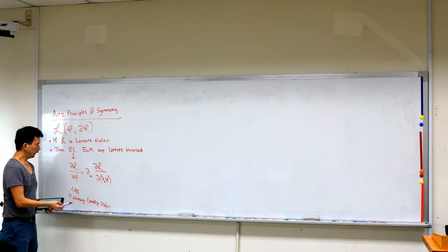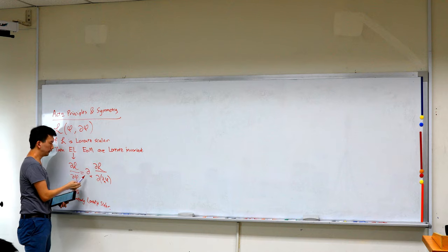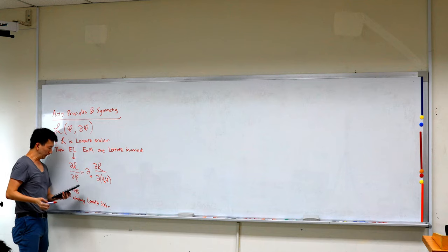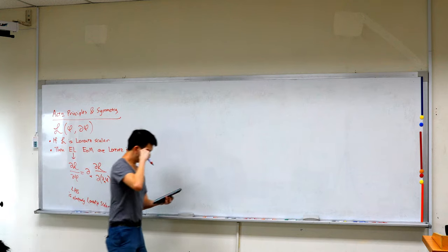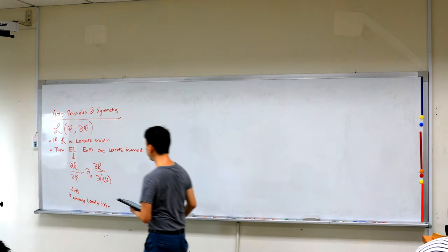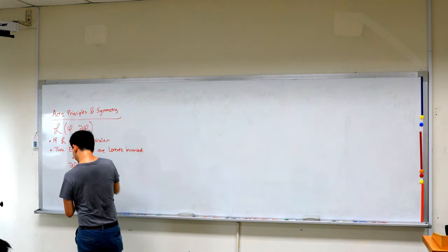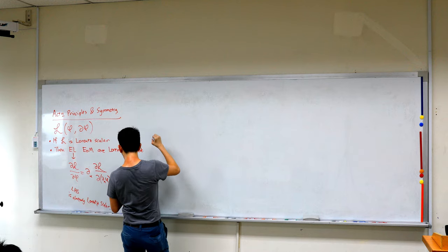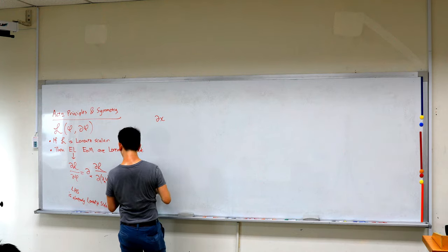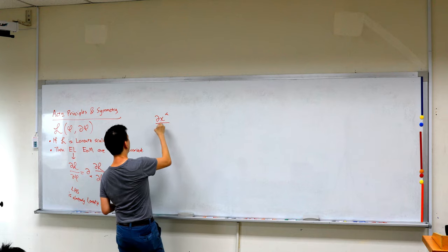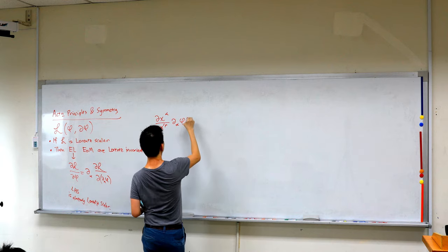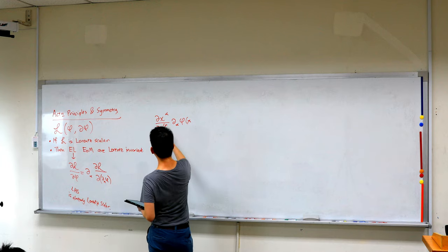The key thing to figure out is how this object transforms. We know how the derivative transforms. So the derivative of the scalar with respect to x, contracted with the Jacobian, is going to give you the derivative with respect to x-prime mu, which I'll denote as partial mu-prime.